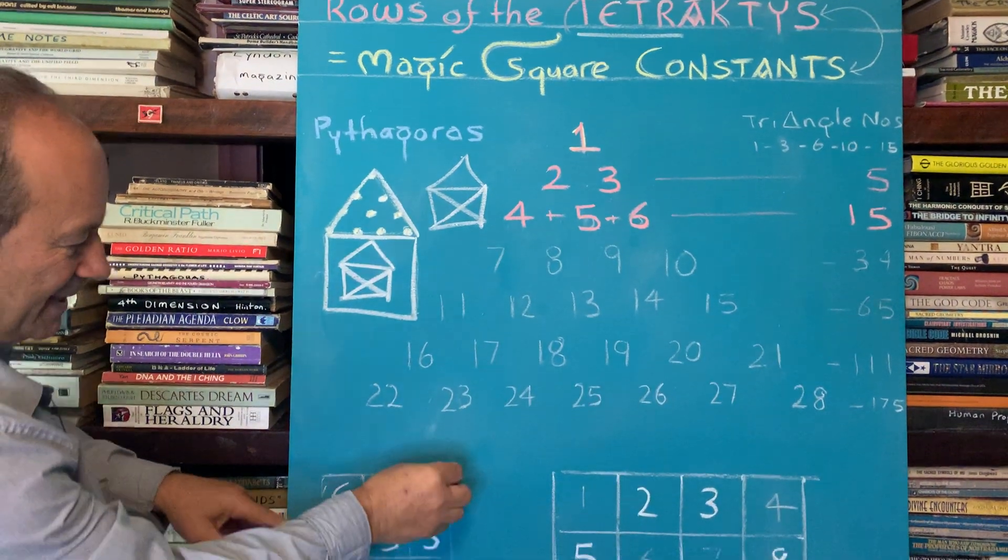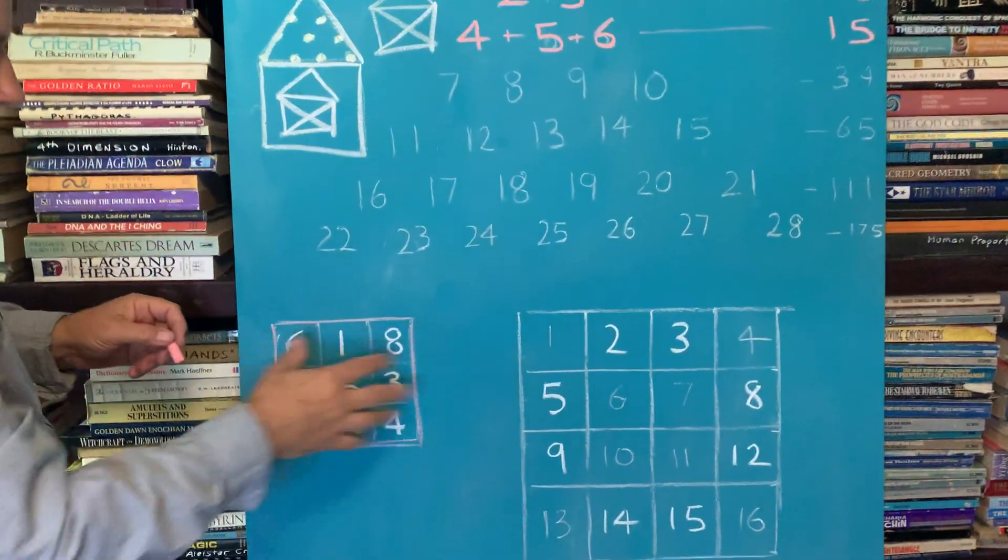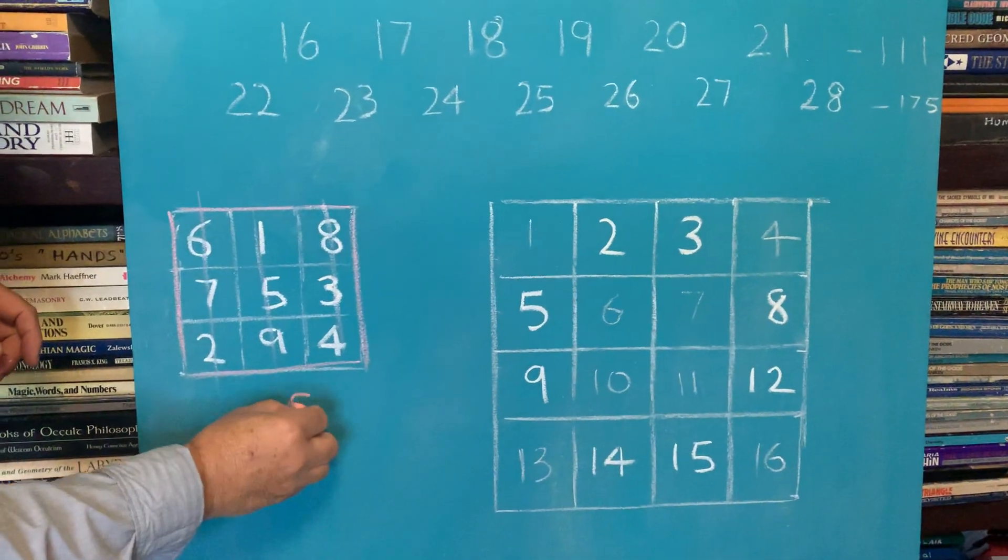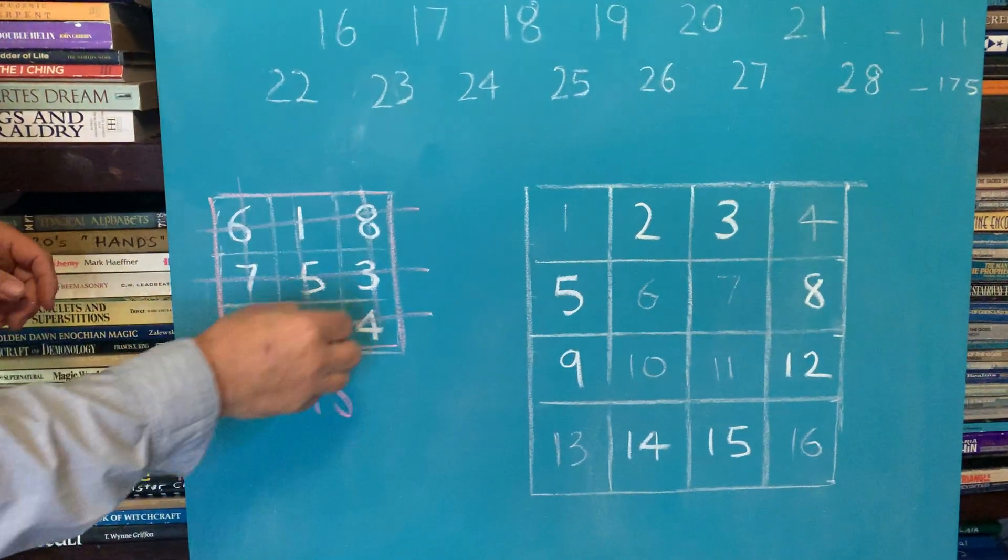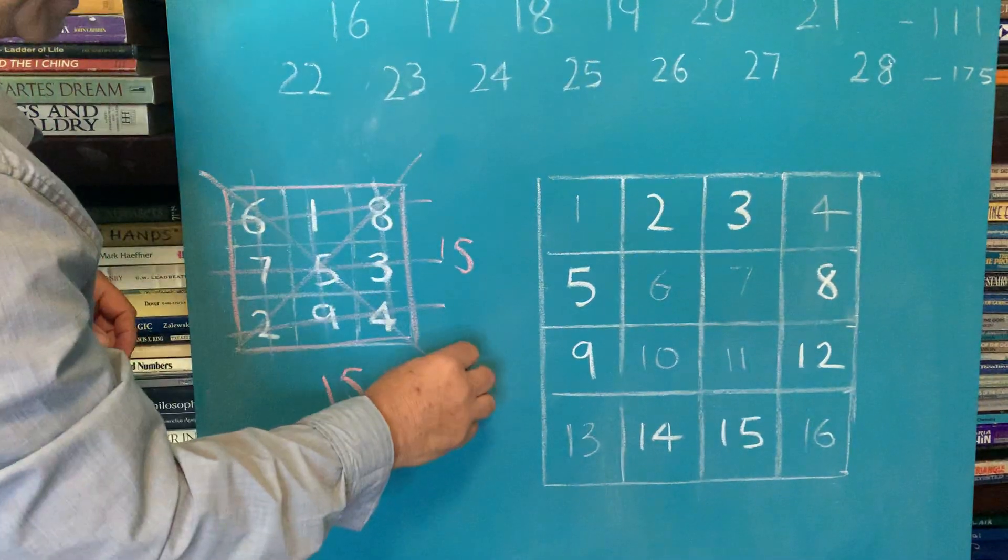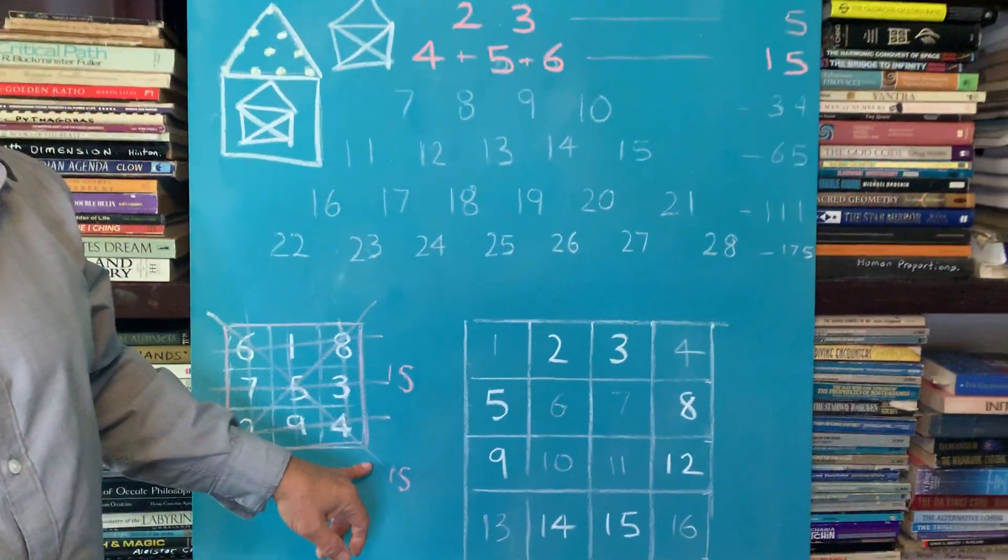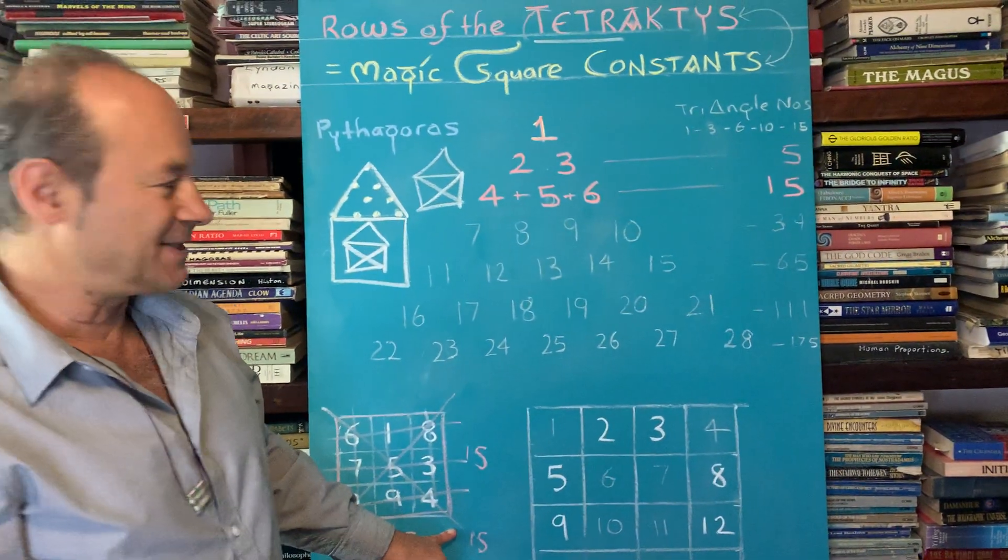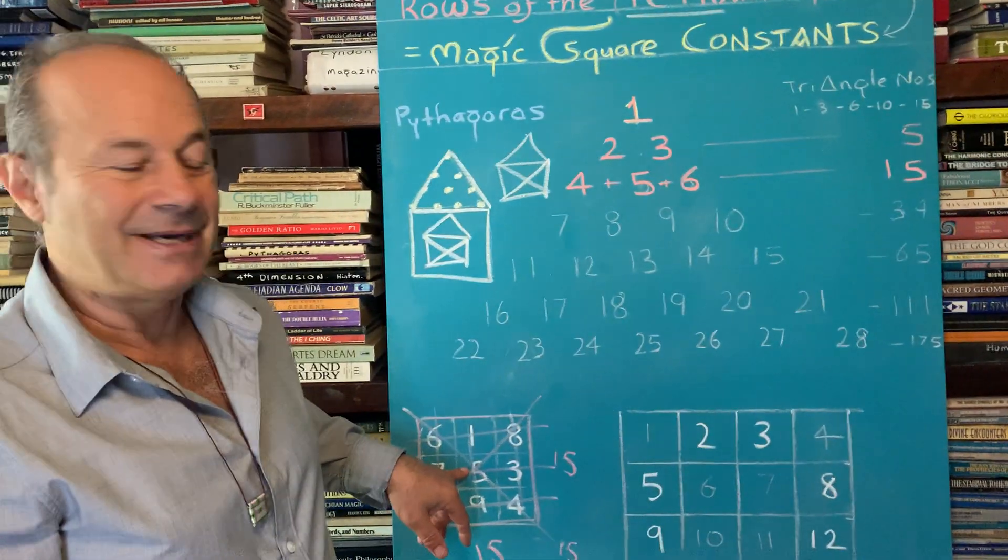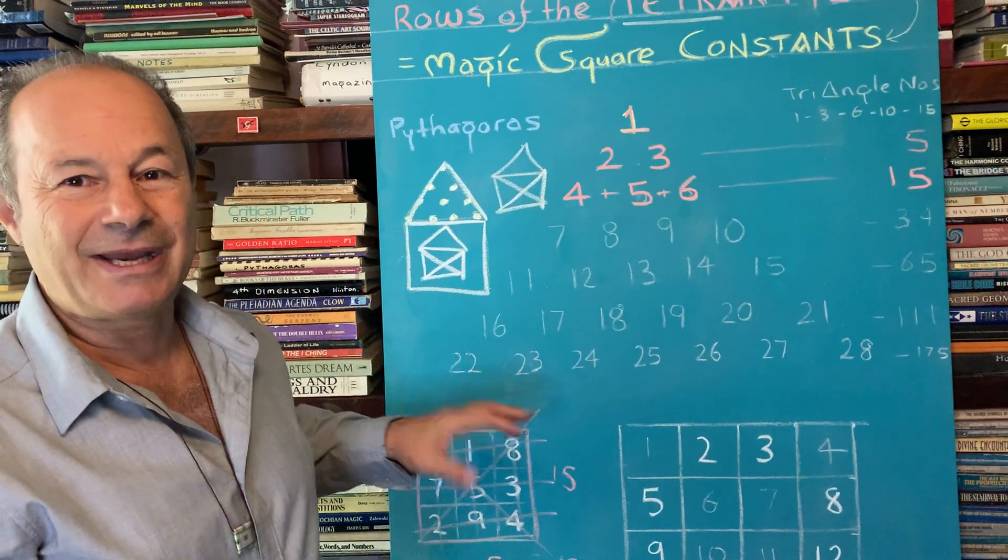Now what's so special about 15 is that this magic square, nine numbers arranged so that all the three vertical columns add up to 15. The three horizontal rows add up to 15. And also the two diagonals add up to 15. So that's why it's called a constant. Constant means forever. This is timeless fixed design. It's harmonic. It's ringing a bell.